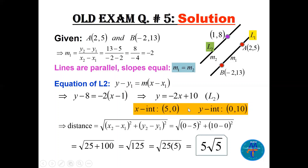From L2: y = −2x + 10. For the x-intercept, let y = 0, so x = 5, giving point (5, 0). For the y-intercept, let x = 0, so y = 10, giving point (0, 10). Now find the distance between (5, 0) and (0, 10): √(5² + 10²) = √(25 + 100) = √125 = 5√5.